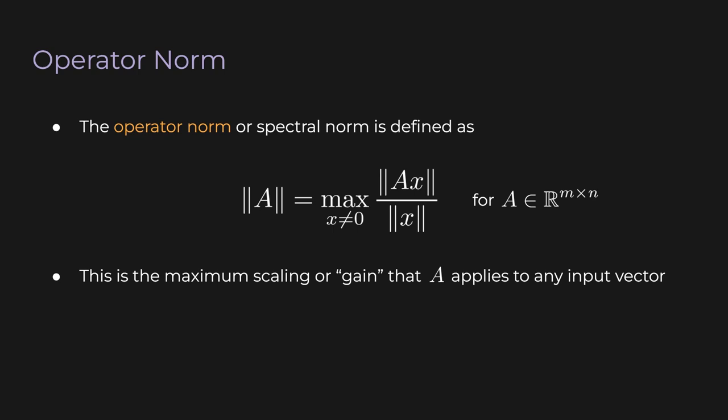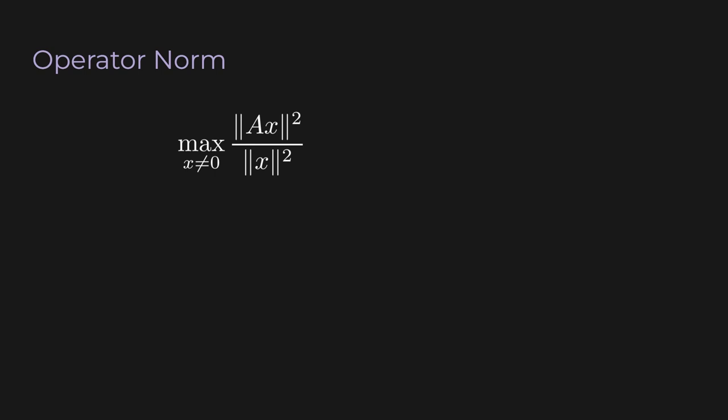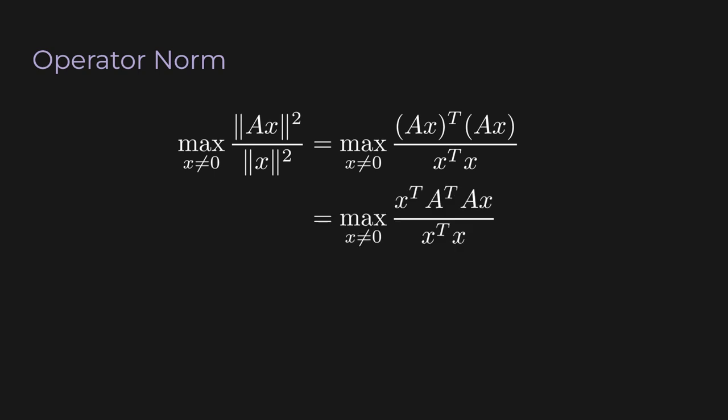To find the operator norm mathematically, we start by squaring the expression we're maximizing. Squaring is monotonic increasing, so the x that maximizes the squared expression is the same x that maximizes the original. Squaring lets us replace norms with transposes: ‖Ax‖² = x transpose A transpose Ax, and ‖x‖² = x transpose x. The numerator x transpose A transpose Ax is a quadratic form with matrix A transpose A. Furthermore, since any scalar multiplier cancels between numerator and denominator, we can assume without loss of generality that x is a unit vector.